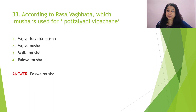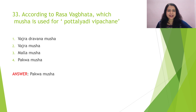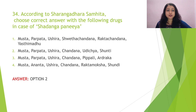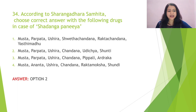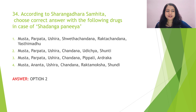Question 33: According to Rasa Vagbhata, which musha is used for khatali yadi vipachana? The options are vajradravana musha, vajra musha, malla musha, and pakva musha. The answer is pakva musha. Question 34: According to Sharangadhara Samhita, choose the correct answer regarding shadangapaniya — its reference is in the treatment of jvara. Its composition is khana (musta), chandana, parpada, ushira, shunti, and udhichya (ambu).